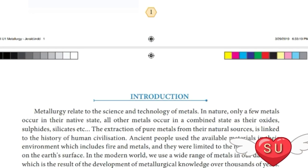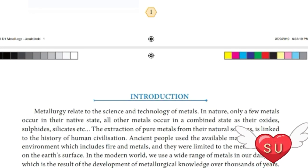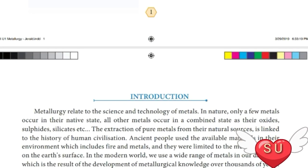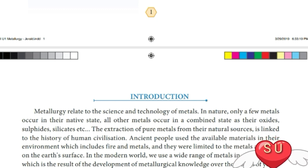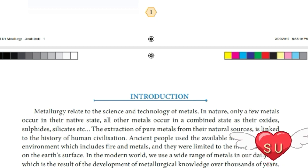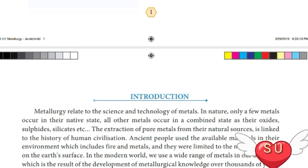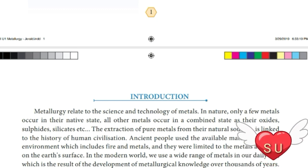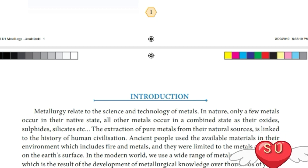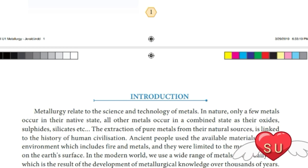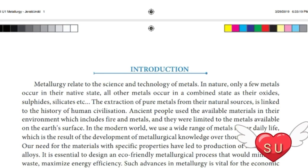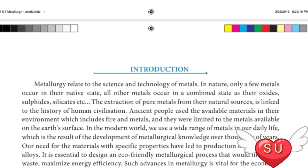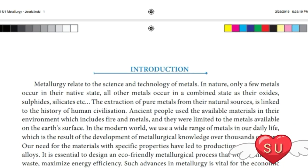What is meant by metallurgy? Metallurgy relates to the science and technology of metals. In nature, there are 118 elements. Among the 118 elements, most of them are metals. Nearly 72 elements occur as metals.